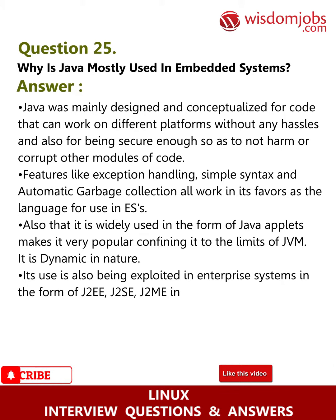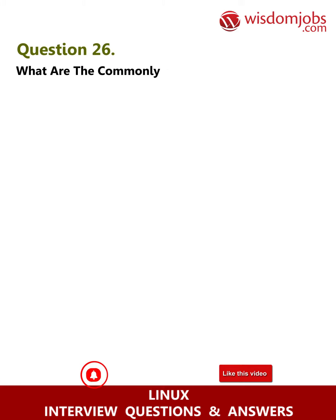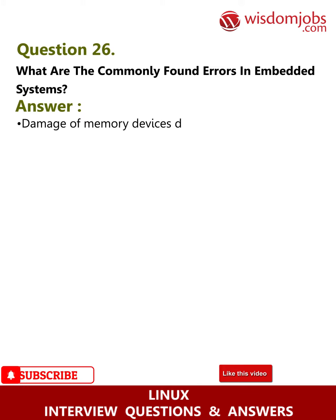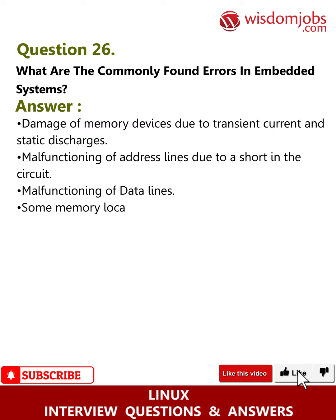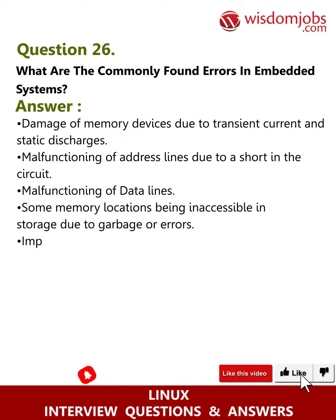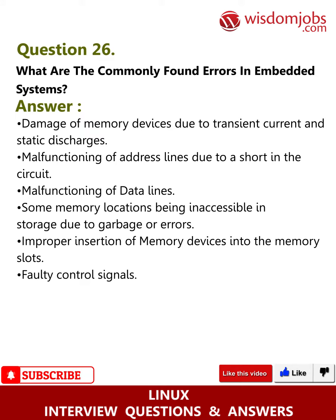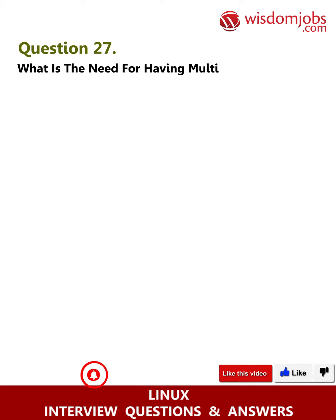Question 26: What are the commonly found errors in embedded systems? Answer: Damage to memory devices due to transient current and static discharges, malfunctioning of address lines due to a short circuit, malfunctioning of data lines, some memory locations being inaccessible in storage due to garbage or errors, improper insertion of memory devices into memory slots, and faulty control signals.